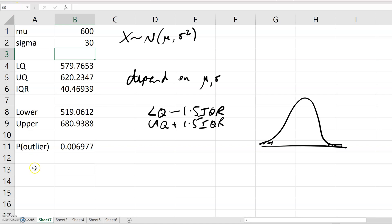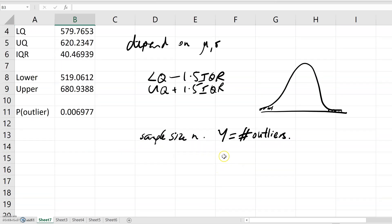Now let me suppose I have a sample of size n, and let Y be the number of outliers. Then Y is going to be binomial, with number of trials n and probability of success given by the probability of that outlier.